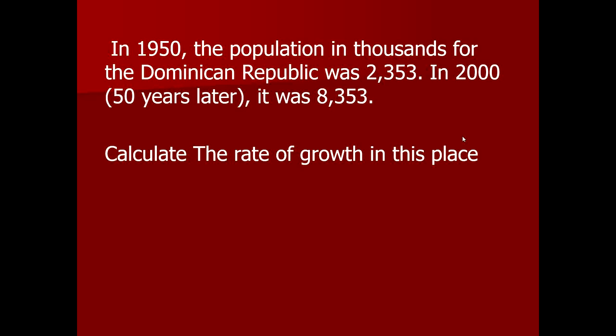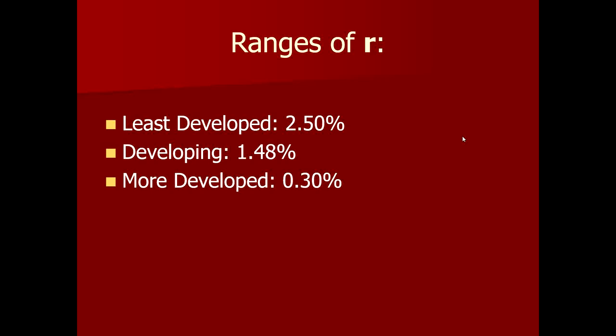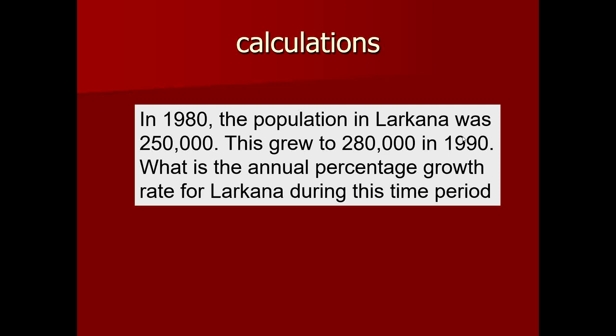Using this equation, calculate the growth rate of the given place. The range of growth rates differs globally. In developing countries it is around 1.48. In least developed countries it is above replacement level fertility, for example in Kenya, South Africa, Ghana, and Pakistan. In more developed countries it is less than 1 — around 0.30 — indicating the population is going into negative balance. Calculate the percentage growth rate from the given population changes.